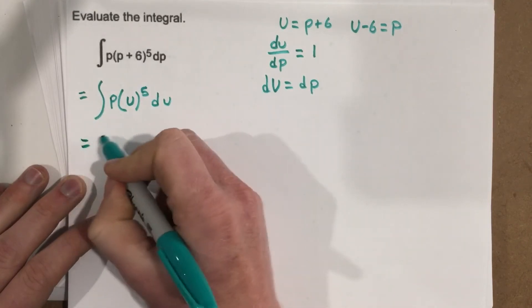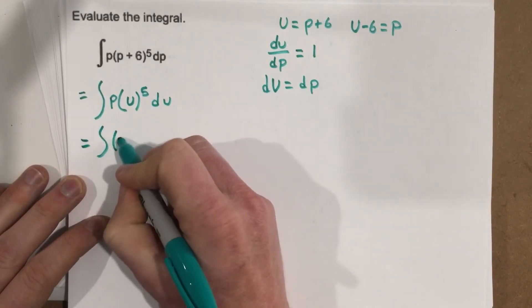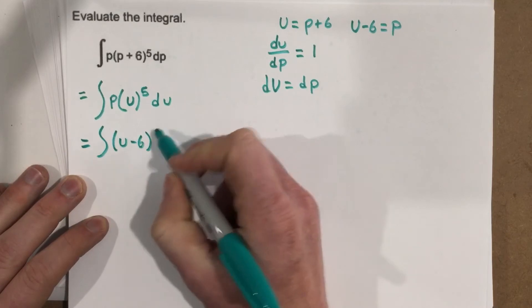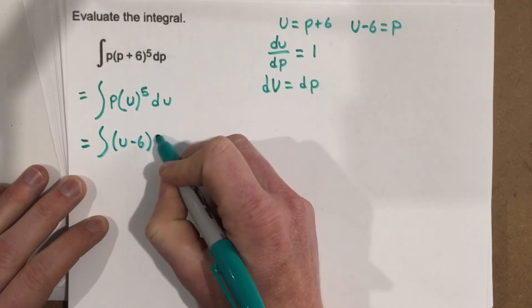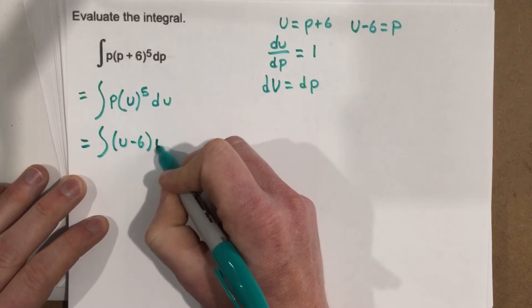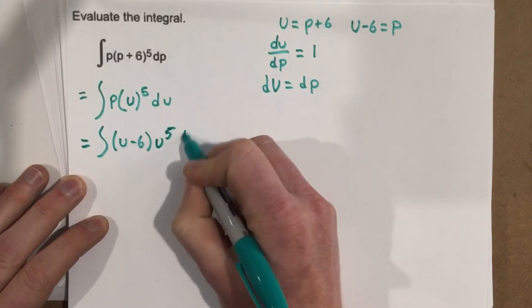So let's do that. Integral of u minus 6, then that would be times u to the 5th, du.